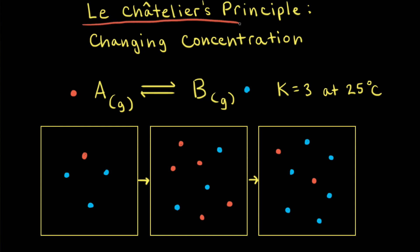Le Chatelier's Principle says if a stress is applied to a reaction mixture at equilibrium, the net reaction goes in the direction that relieves the stress. Changing the concentration of a reactant or product is one way to place a stress on a reaction at equilibrium. For example, let's consider the hypothetical reaction where gas A turns into gas B. Let's say the reaction is at equilibrium and we suddenly introduce a stress, such as increasing the concentration of reactant A.